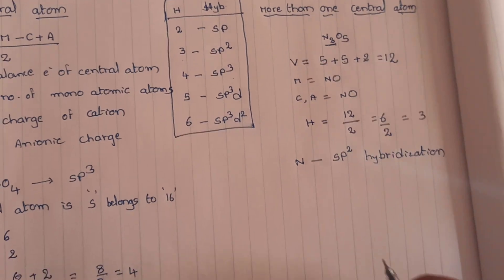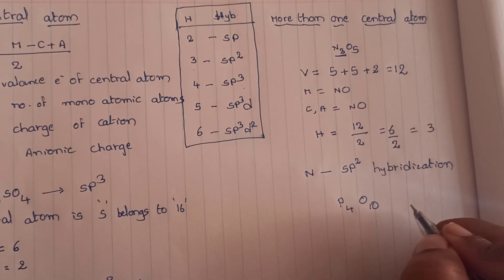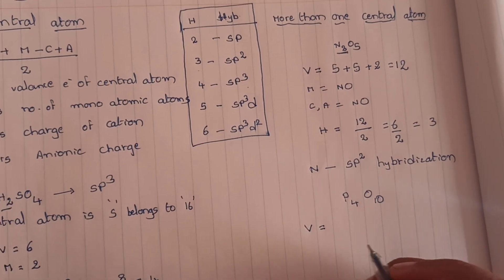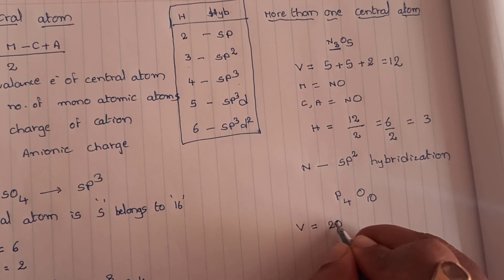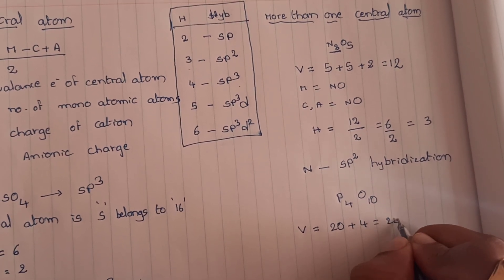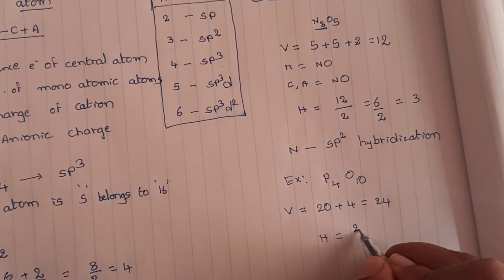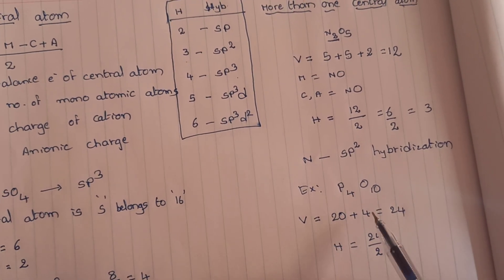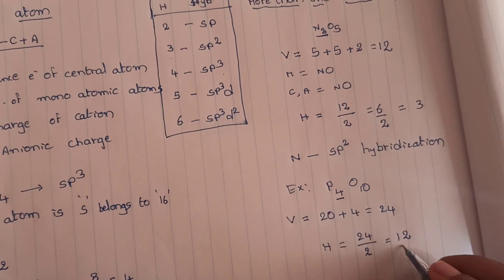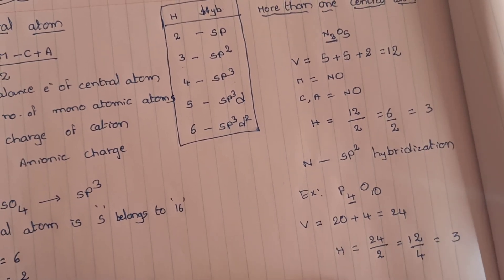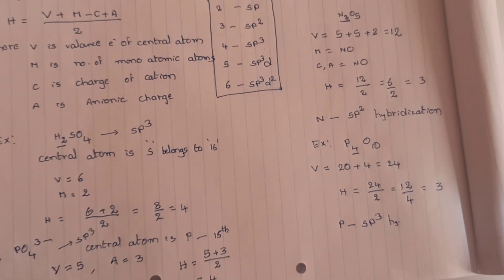In this way you can find hybridization of any type of molecule. For example P₄O₁₀: the central atom is phosphorus and there are 4 phosphorus atoms. Each phosphorus gives 5 electrons, so 4 times 5 equals 20, plus 4 atoms equals 24. Hybridization number equals 24 divided by 2 equals 12, then divide by 4 atoms equals 3 — so each phosphorus undergoes SP3 hybridization.